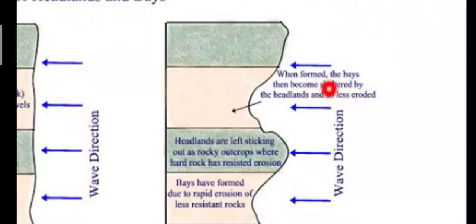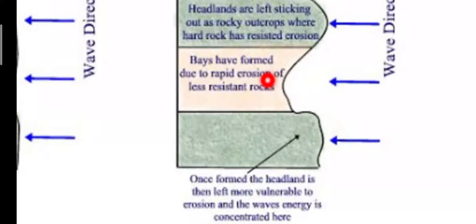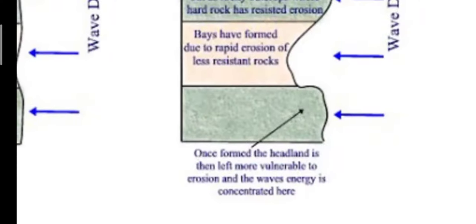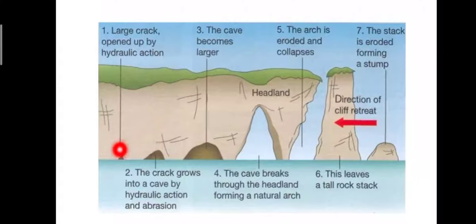When formed, the bays then become sheltered by the headland and so less eroded. Headlands are left sticking out as rocky outcrops where hard rock has resisted erosion. Bays have formed due to rapid erosion of less resistant rock. Once formed, the headland is then left more vulnerable to erosion and the wave's energy is concentrated here.